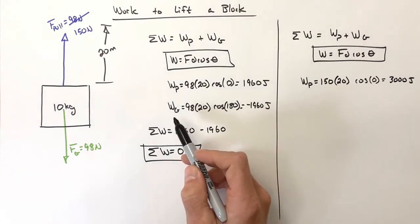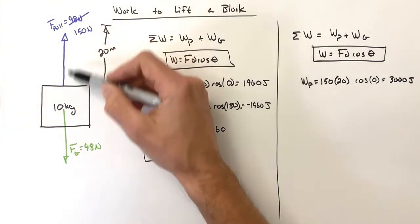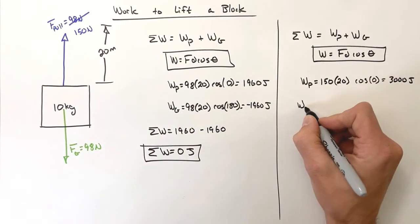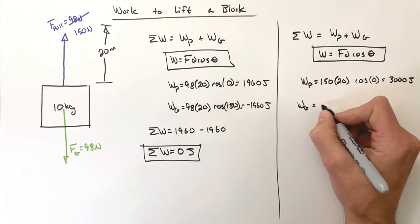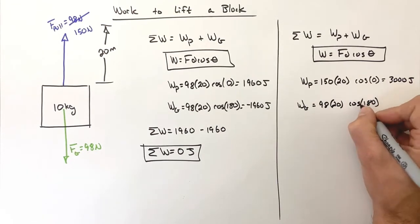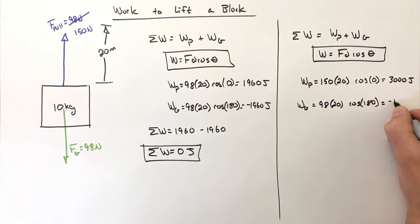Gravity hasn't changed at all by us changing how hard we're pulling upward on this block. That hasn't affected gravity, so the work by gravity is still going to be negative 1960 joules.